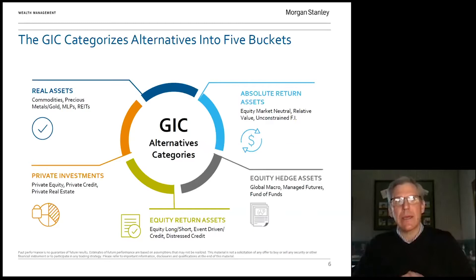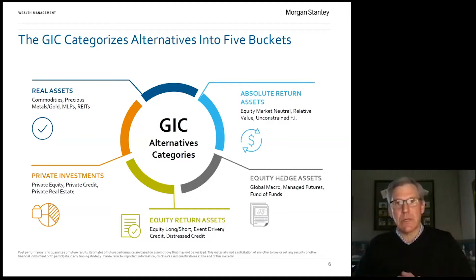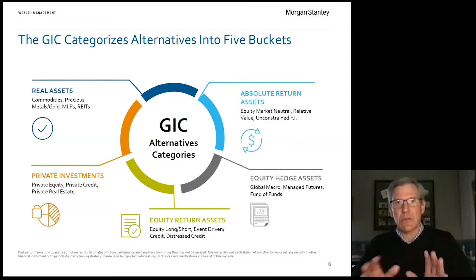We like to look at five different investment buckets or strategies within the alternative investment category. GIC — the Global Investment Committee — is Morgan Stanley's team of investment strategists that help assemble asset allocation recommendations for institutional and high net worth clients. They help organize different strategies based on the type of outcome we're searching for. Within the private investments section, you'd be thinking about private real estate investment trusts, which are substantially different than a publicly traded REIT listed on the stock market.